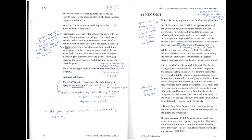Shortly after leaving the park, Weasel and Edward Riley left the group and proceeded along Russell Street to return to the Bain Street Hostel, whilst the balance of the group travelled down Edmundstone Street towards the Oxford Street Hostel. This group was followed by Damrow and Harris to a nearby area known as SEQEB Park on the corner of Boundary and Brereton Streets, West End. Harris made a number of calls on the police radio seeking assistance — firstly from a Dutton Park car, and thereafter from any car in the vicinity. A Dutton Park crime squad vehicle containing Acting Sergeant Symes and Senior Constable Bishop responded to the call.